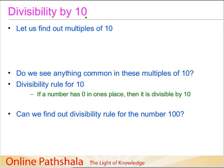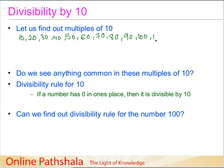Let us first start with the easier one. Let us try to come up with a divisibility test for the number 10. In order to do that, we first find out the multiples of 10. So, what are the various multiples of 10? We start with 10, then we have 20, 30, 40, 50 — it is just the multiplication table for 10 — then 100, 110, 120, and it can go on.